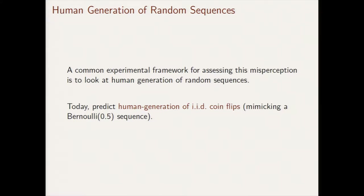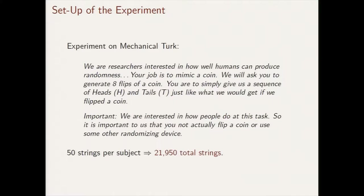Starting from Kahneman and Tversky in 1972, there has been extensive evidence of such misperceptions of randomness. A common experimental framework is to have humans generate random sequences. We follow this tradition and try to predict human-generated IID coin flips. We went on Mechanical Turk and asked a large number of subjects to generate random sequences as if they were flipping a fair coin multiple times. Each subject generated 50 strings of length eight, giving us about 22,000 total human-generated strings.